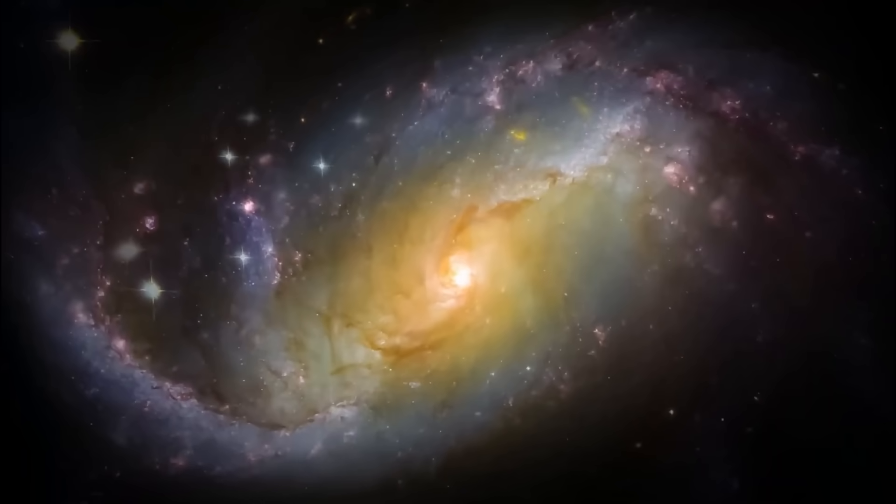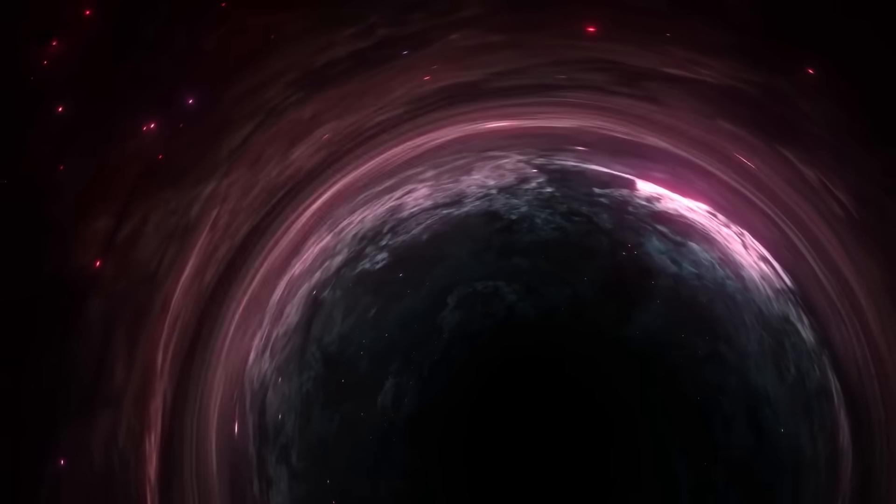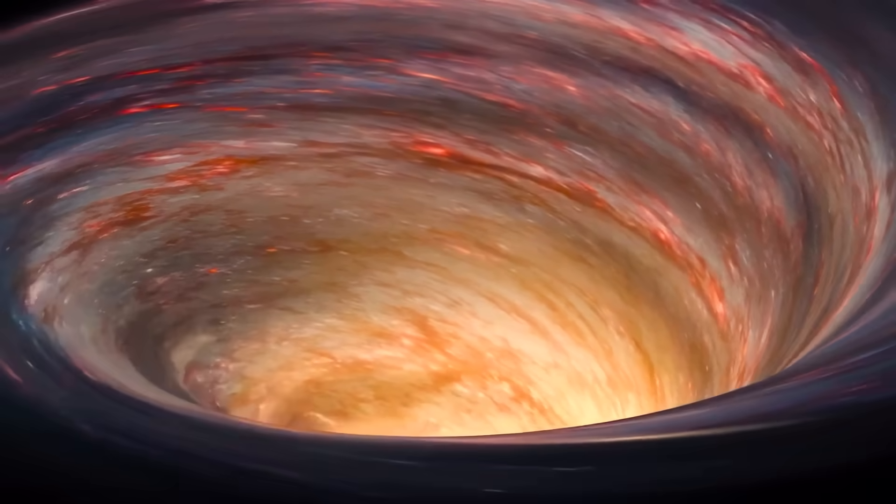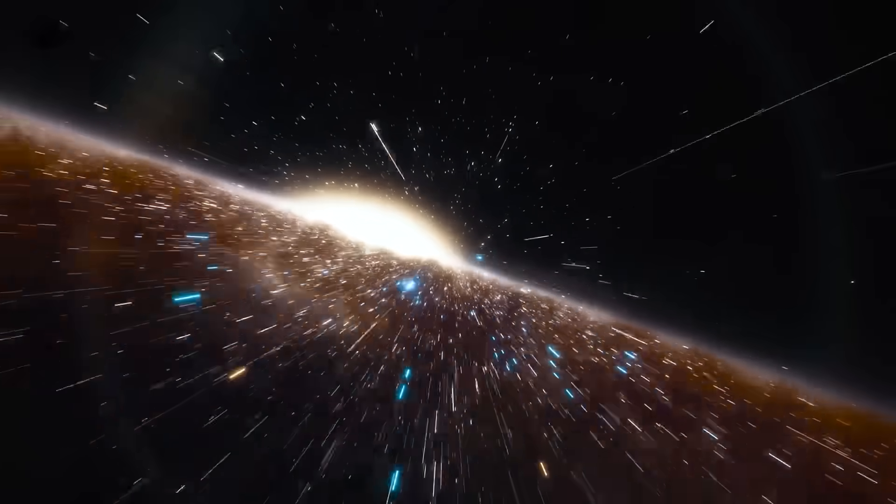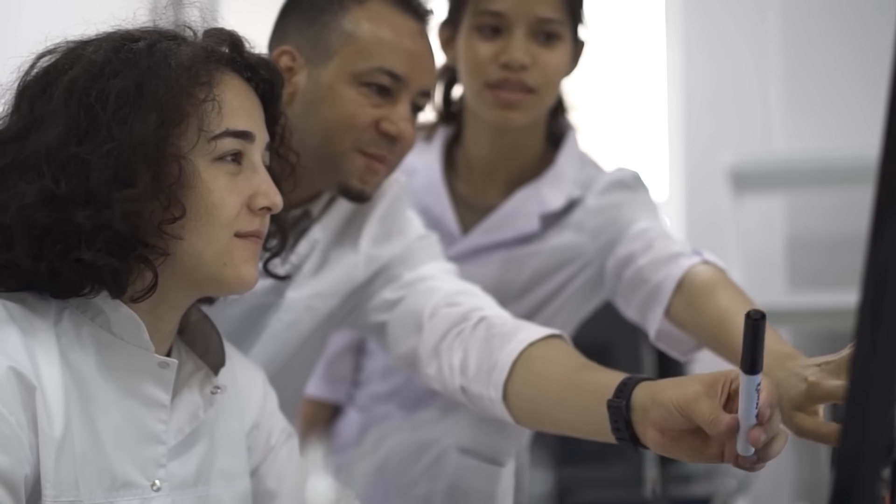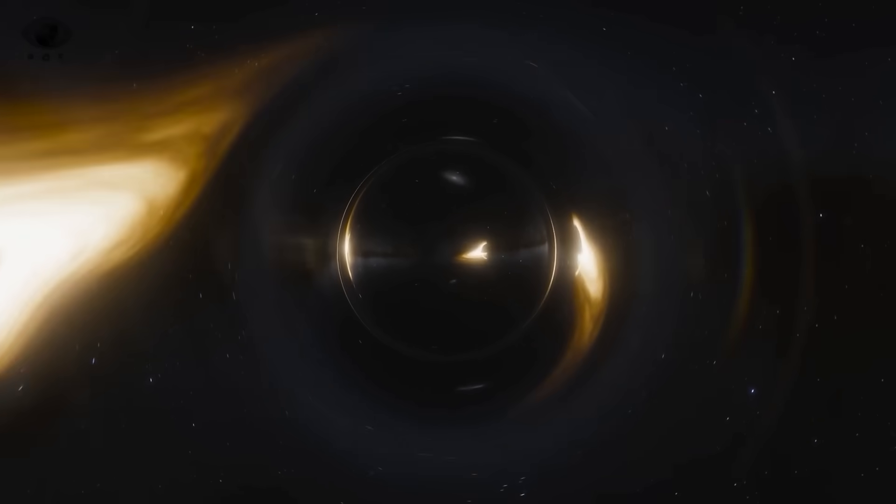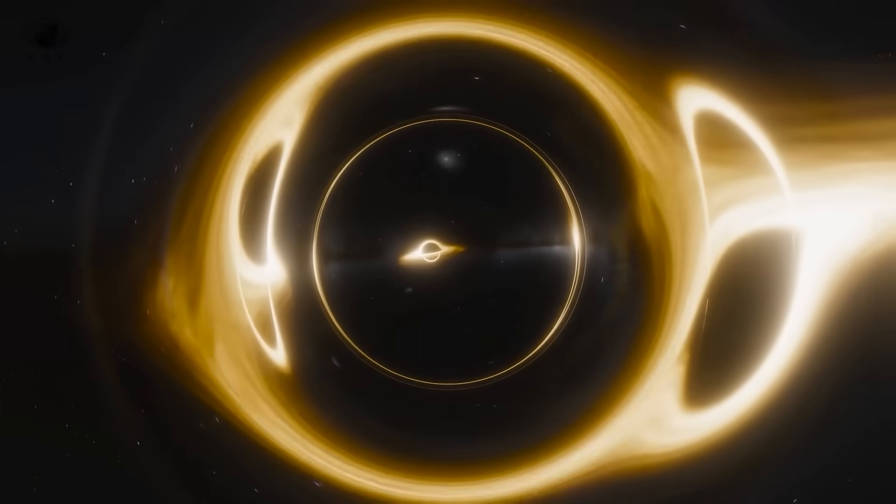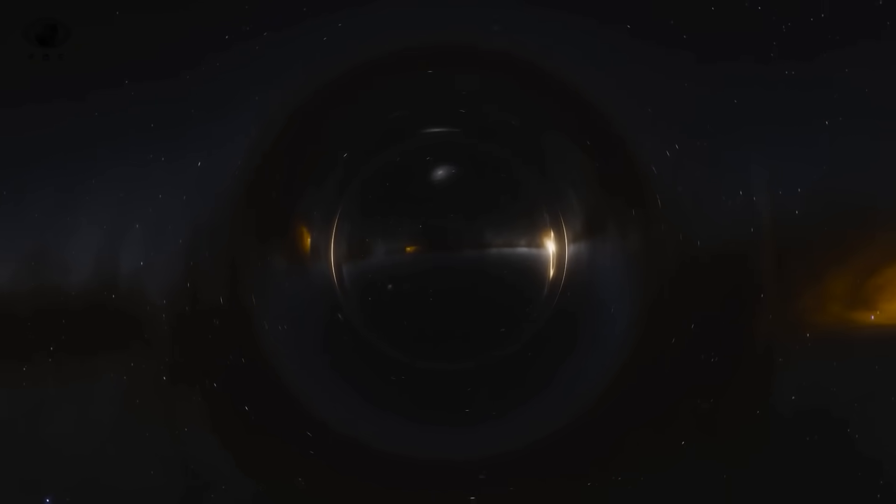But the precision and intensity of this lensing effect challenge even that theory. Because the distortion is too strong, too localized, it behaves not like a diffuse cloud of dark matter, but like an object, a structure with defined mass, symmetry, and edges. Could it be a cluster of dark matter condensed into a shape we don't yet understand? Or is this gravitational echo the remnant of something older, something left behind? Some physicists are now quietly floating ideas far more radical, that this isn't dark matter at all, but evidence of something built, something ancient and invisible, still warping space in its silence.